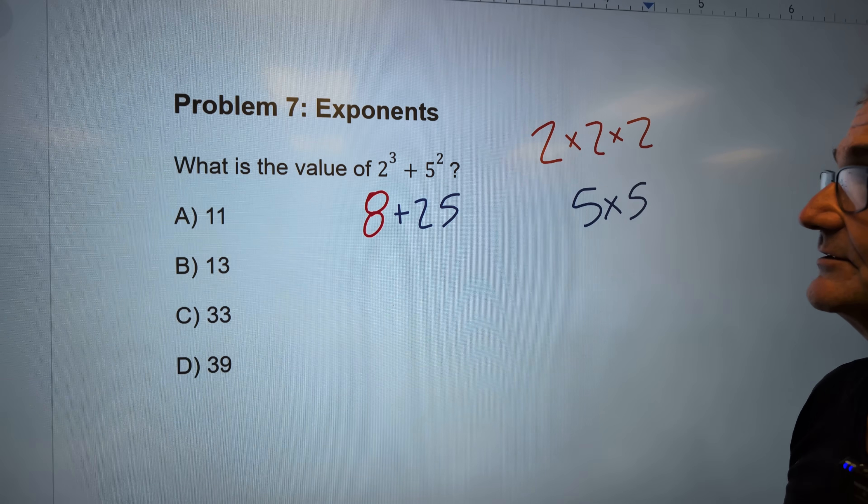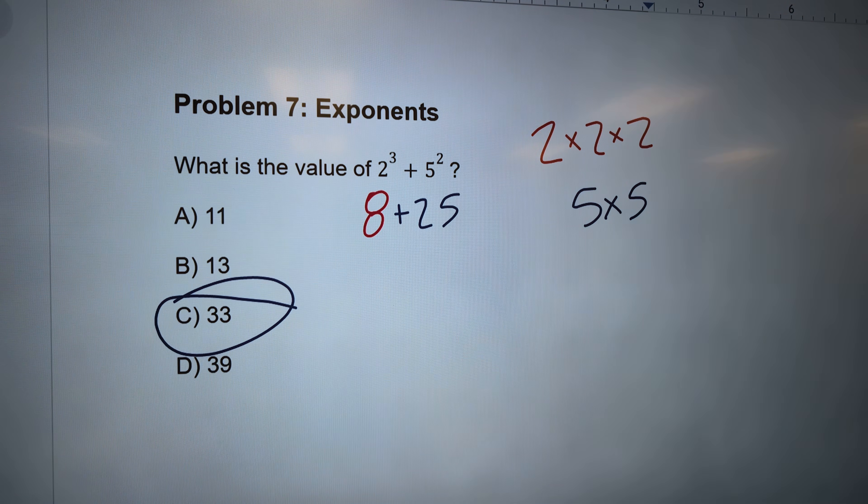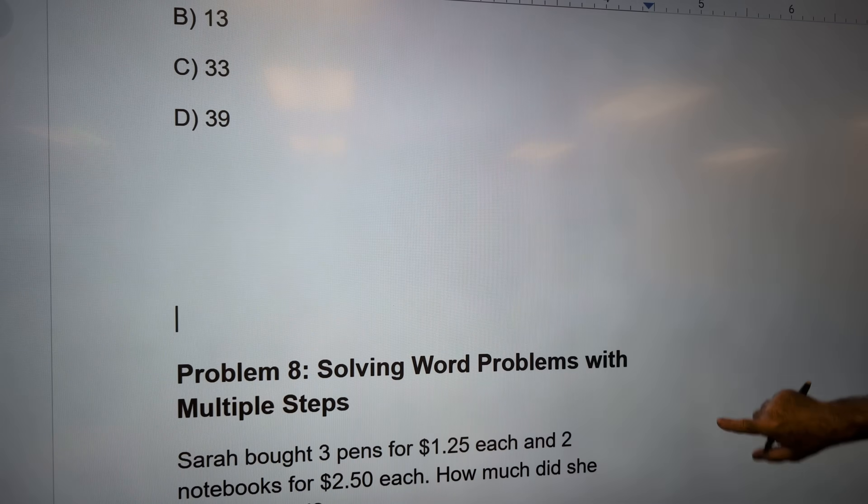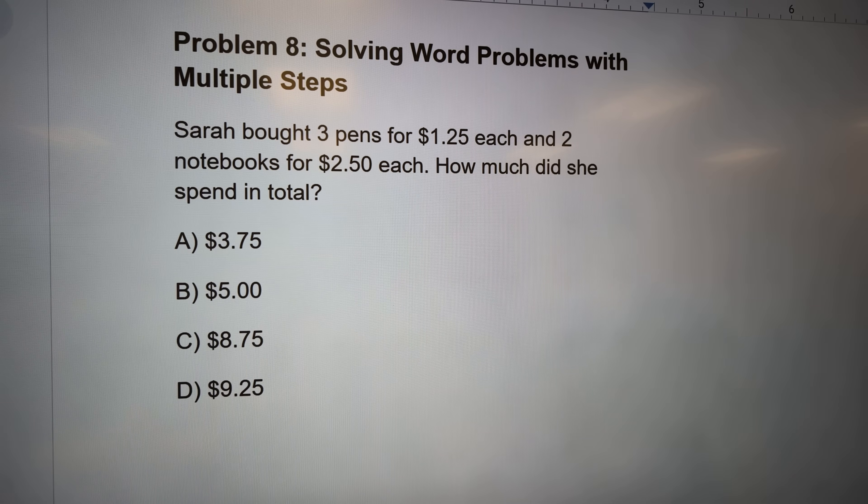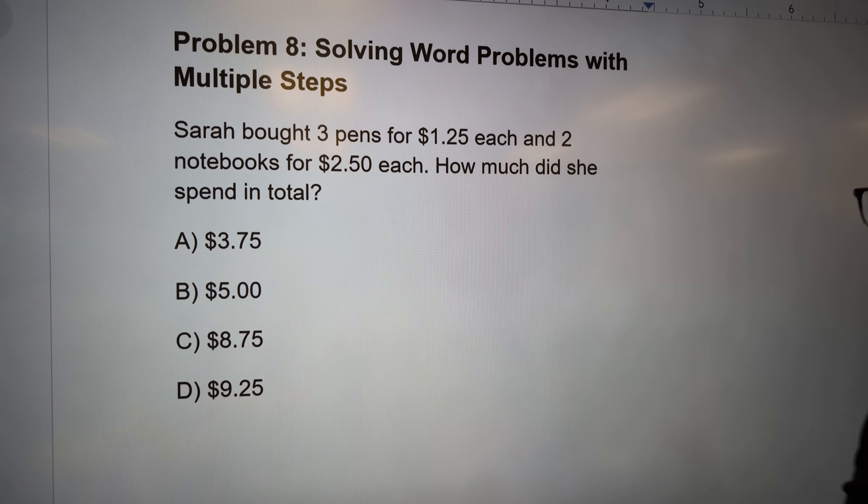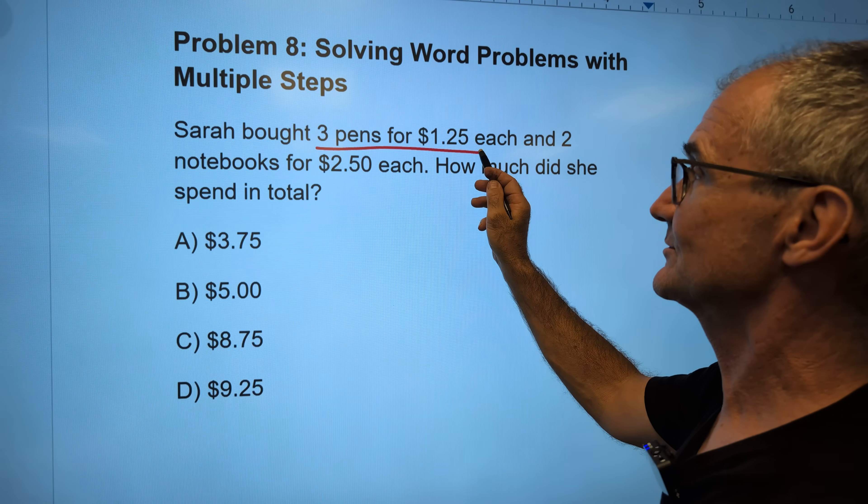8 plus 25 is 33. Correct answer, answer C right there. And then lastly, problem number 8, solving word problems with multiple steps. Again, see if you can do this in your head before I do it. 3 pens are $1.25.